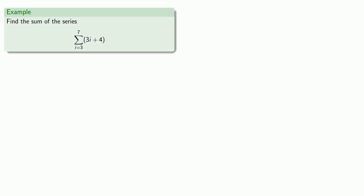Suppose I want to find the sum of the series, i goes from 3 to 7 of 3i plus 4. So the series is the sum of the terms calculated using the formula 3i plus 4 for i values from 3 to 7.